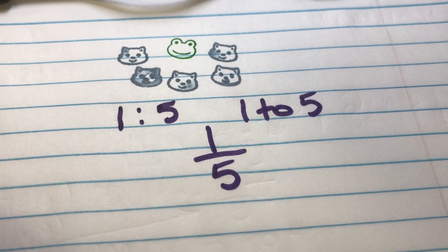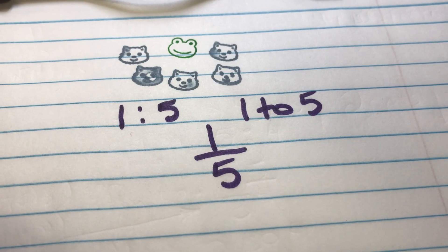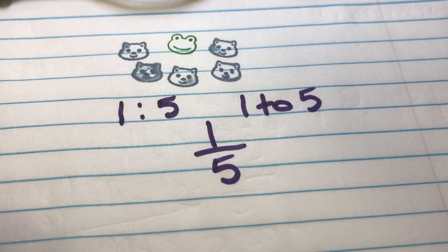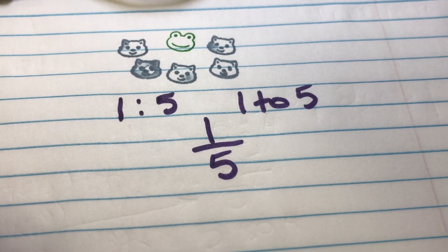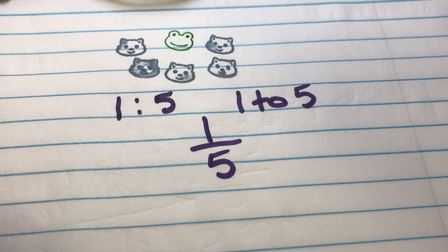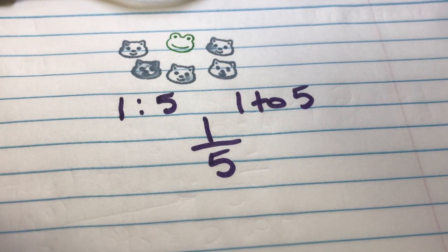We also use this to make equivalent ratios. Like if I say, I know the ratio is one to five, but when I called Mr. Neely to ask how many frogs he had, he said he had two frogs. Well, then you have to wonder, without calling back, how could you find out how many cats he has?